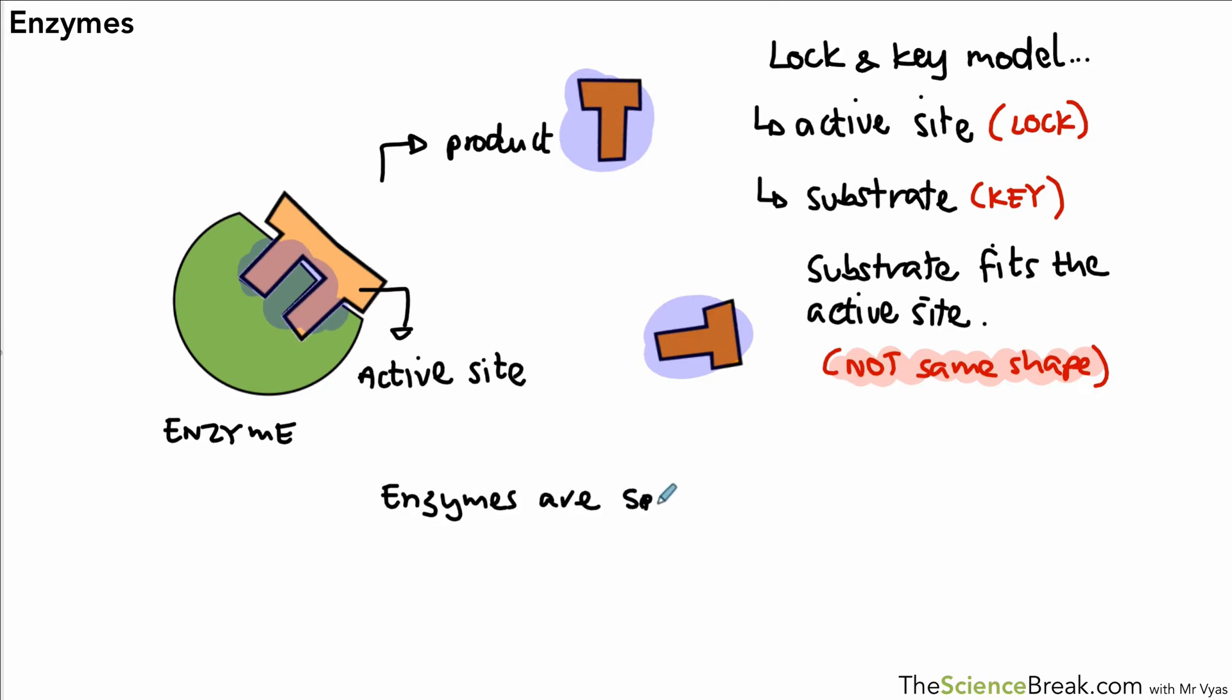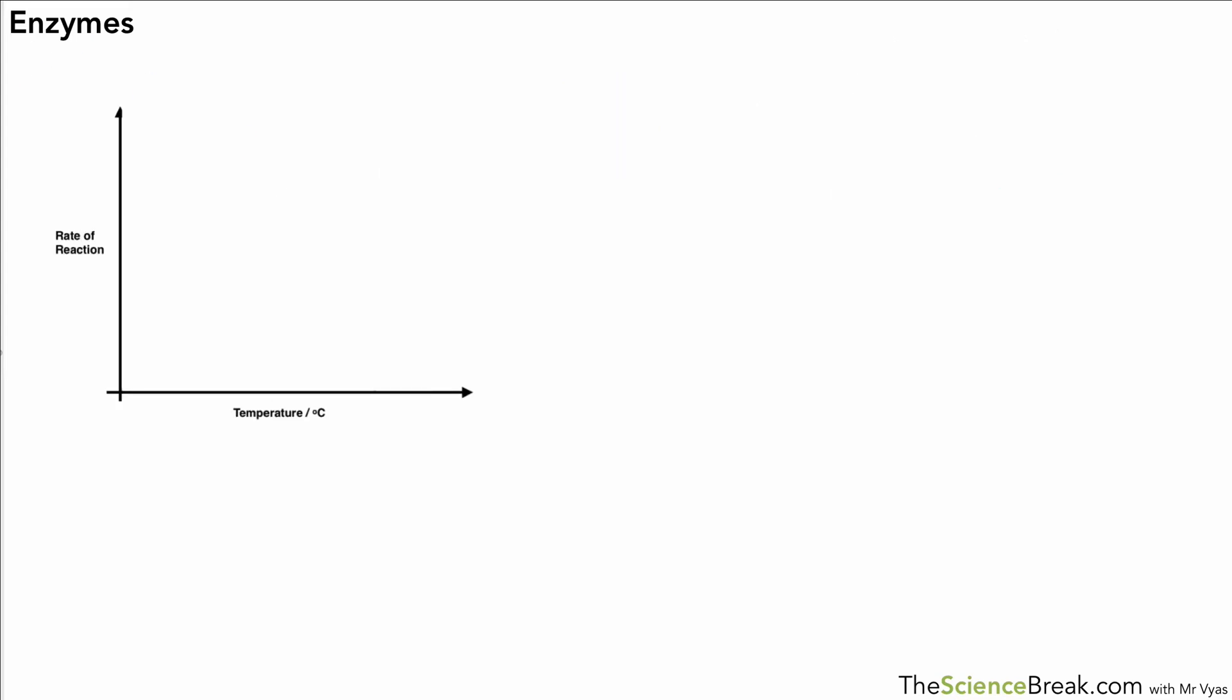The next thing I want to look at is that enzymes are quite sensitive. The surrounding conditions can affect how they work. The first one we're going to look at is temperature. How does the temperature affect the rate of a reaction that's controlled by enzymes? Here's our graph. If we plot temperature versus the rate of reaction we'll see that as the temperature rises we have an increase in the rate of reaction up until a certain point after which it drops very rapidly.